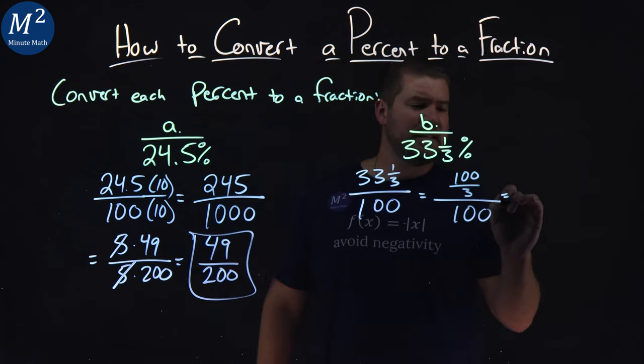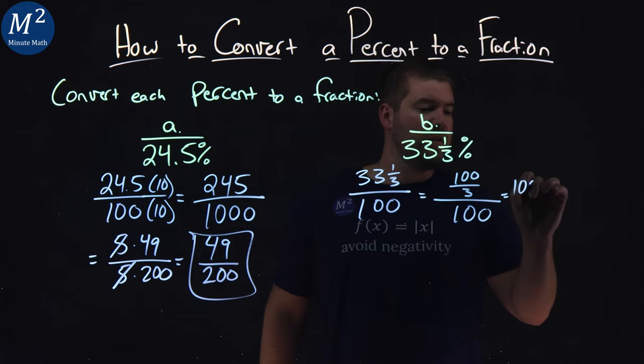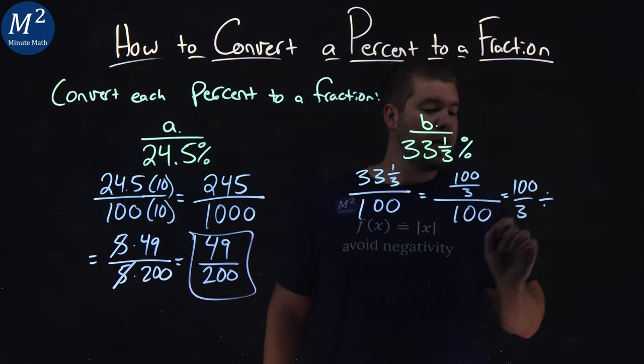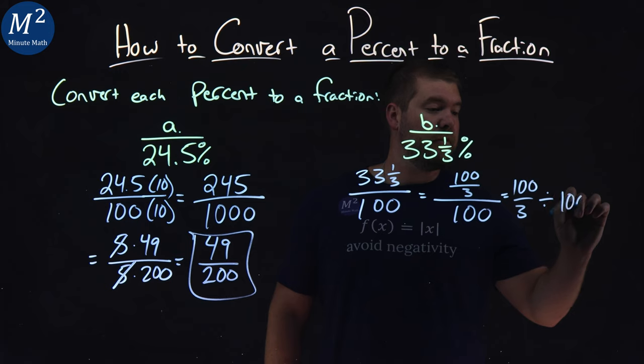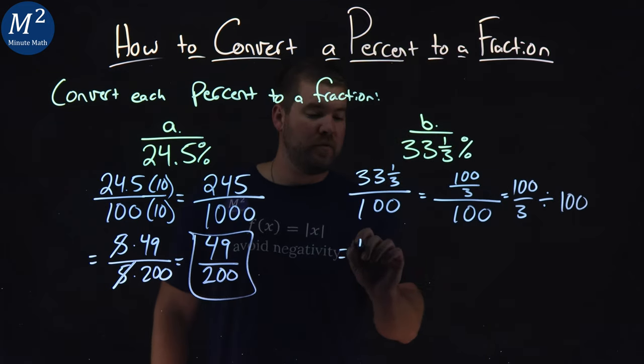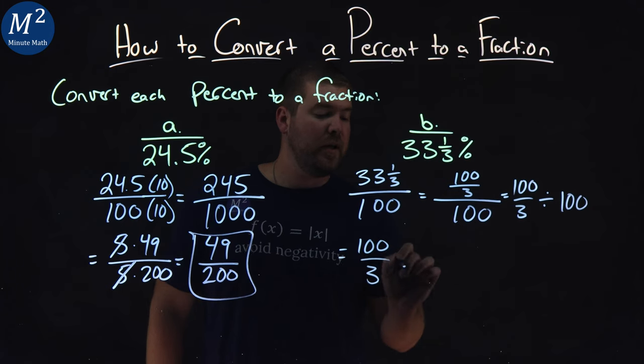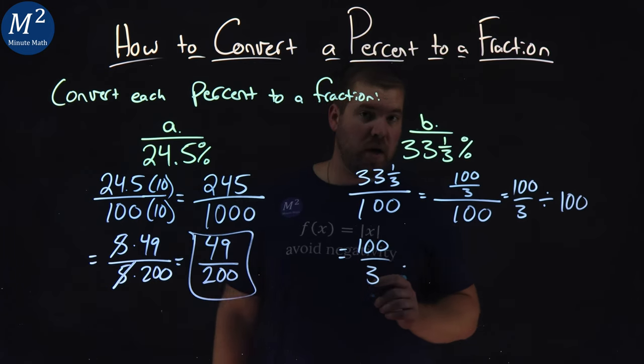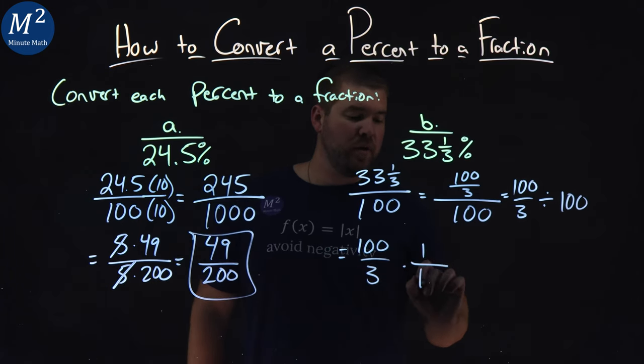Now, if you're like me, I like to see this as 100 over 3 divided by 100. It might be a little easier to see. And then that is the same thing as 100 over 3 multiplied by the reciprocal of 100, which is 1 over 100.